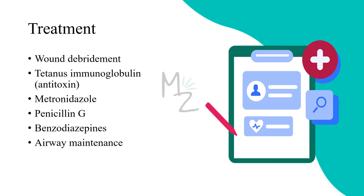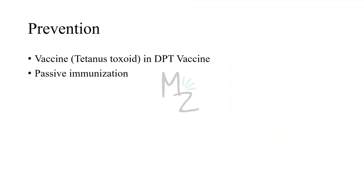Treatment begins with wound debridement, followed by tetanus immune globulin (tetanus antitoxin) to neutralize the toxin. Antibiotics such as metronidazole and penicillin G are used, and benzodiazepines like diazepam can be given to prevent spasms. Adequate airway maintenance and respiratory support are essential to prevent death. Prevention involves immunization with tetanus toxoid — formaldehyde-treated toxin — given in childhood and every 10 years thereafter. It is usually given in combination with diphtheria toxoid and acellular pertussis vaccine as the DPT vaccine. Passive immunization is also an option.